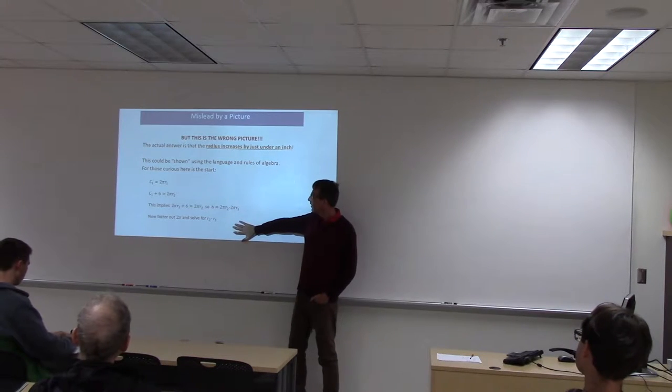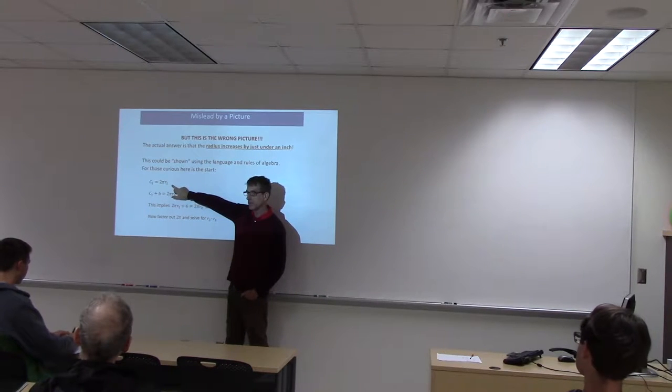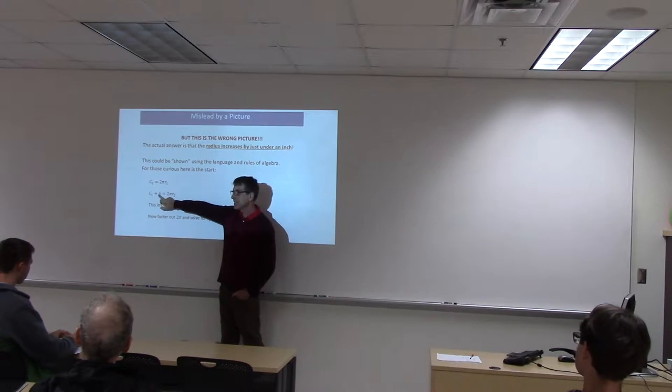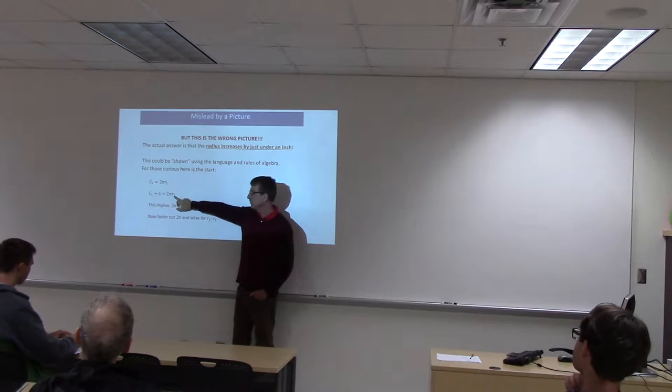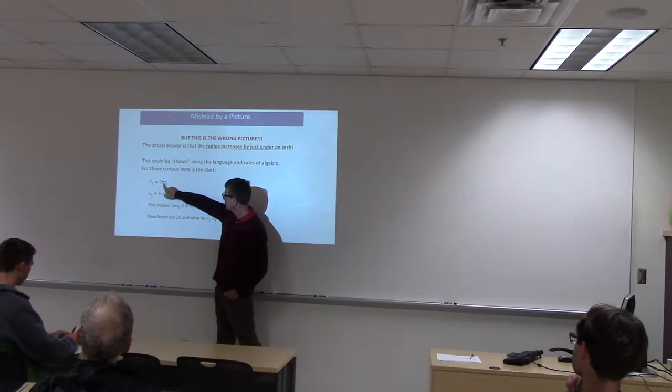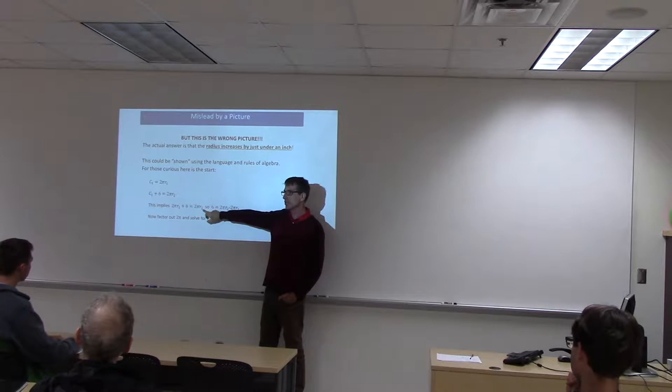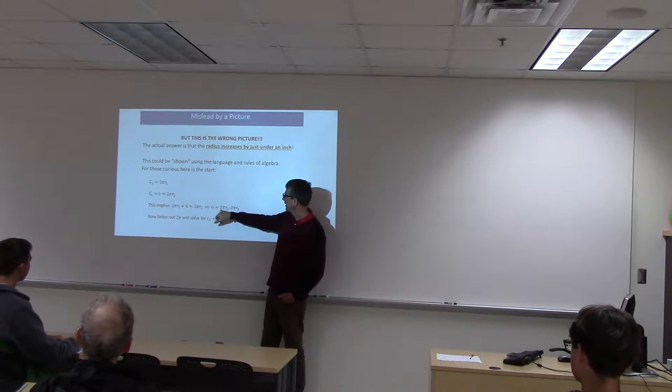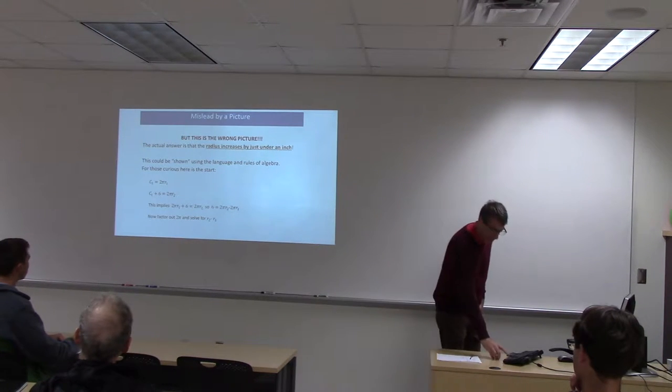Our first circumference is 2πr1. We add six inches to the circumference, so that's going to be 2π times the radius 2. So 2πr1 plus 6 equals 2πr2. Then 6 equals 2πr2 minus 2πr1. Factor out the 2π and solve for r2 minus r1. But that's not the way we're going to do it.